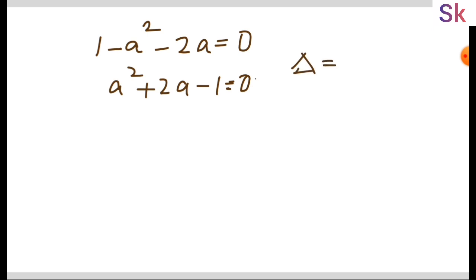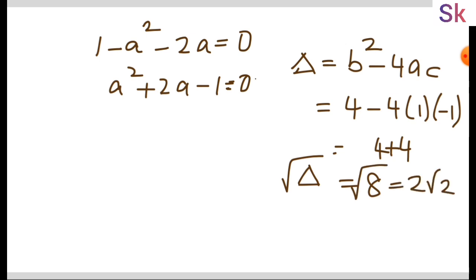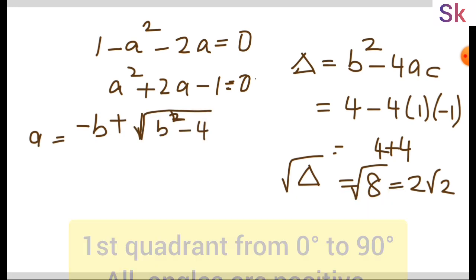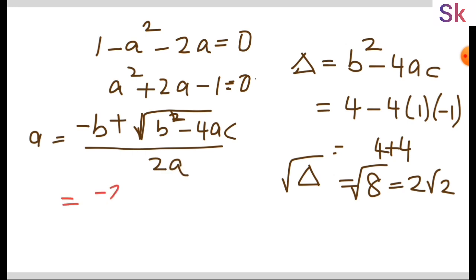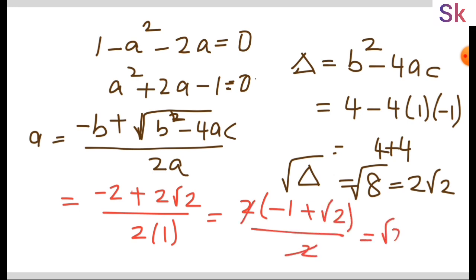Using the quadratic formula, we first find the discriminant: b² minus 4ac. Here b is 2, so b² is 4; a is 1 and c is minus 1, giving discriminant equals 8. The square root of 8 is 2√2. Substituting into the formula: since the angle is in the first quadrant we take the positive root, giving (minus 2 plus 2√2) over 2, which simplifies to √2 minus 1.